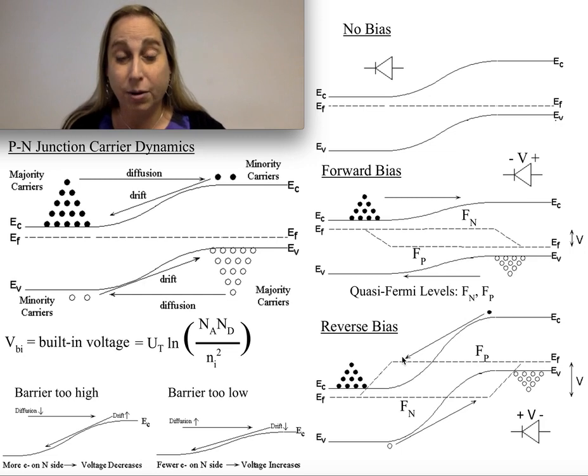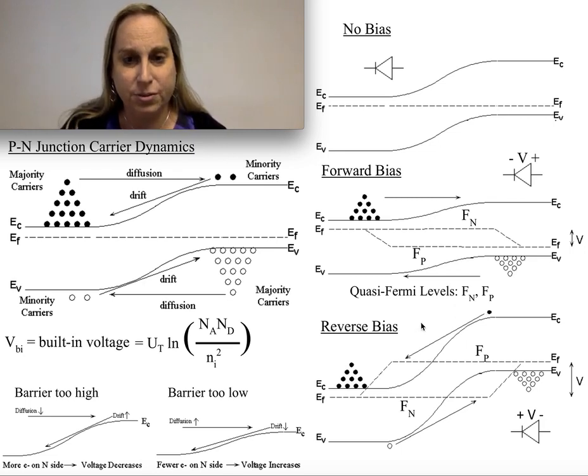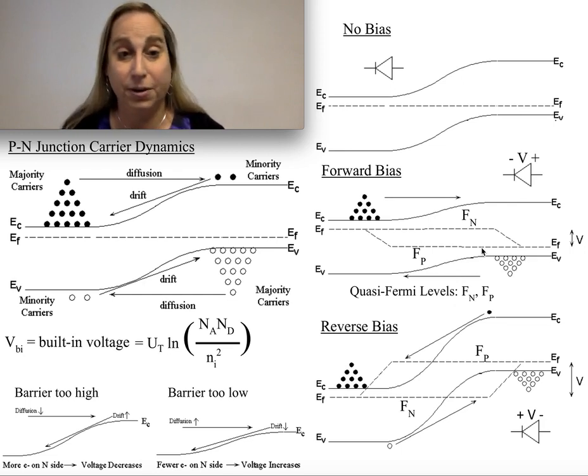By the way, this is why you always look at your IV relationships as e to the V over U_T minus 1. It's this reverse bias region where I'm getting that minus 1 part of the property. Here's where I'm getting the e to the V over U_T part of the property.